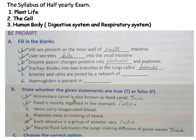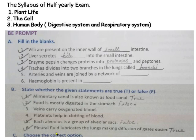True or false: Alimentary canal is also known as food canal — it is true. Food is mostly digested in the stomach — it is false, because food is mostly digested in the small intestine. Each alveolus is a group of alveolar sacs — it is false; each alveolar sac is a group of alveoli. Pleural fluid lubricates the lungs making diffusion of gases easier — it is true.